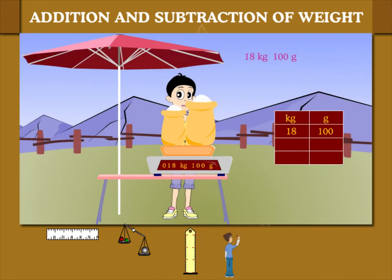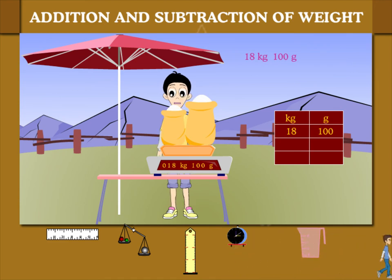Manas now has 2 bags of sugar on the weighing machine and he needs 10 kilogram, 100 grams. Manas removes the smaller bag.